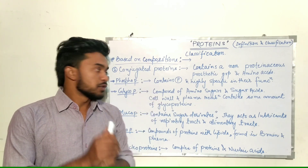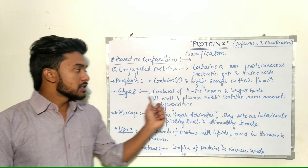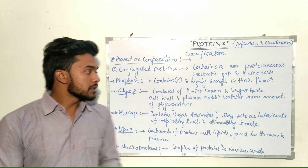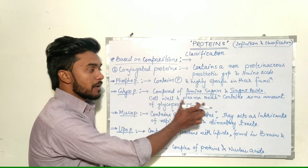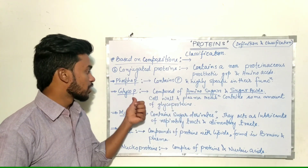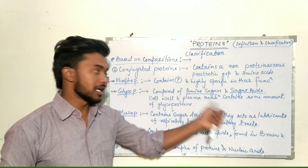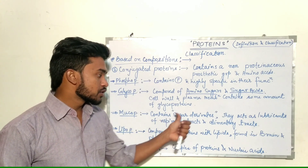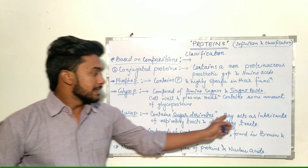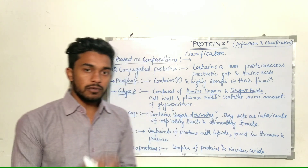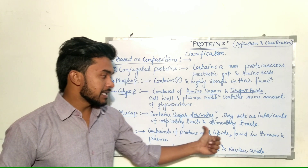Phosphoproteins contain phosphorus in their structure and are highly specific in their function. Glycoproteins are composed of amino sugars, sugar acids, and proteins — they are structural components of the cell membrane, cell wall, and plasma membrane. Mucoproteins contain sugar derivatives and act as lubricants of the respiratory and alimentary tracts.